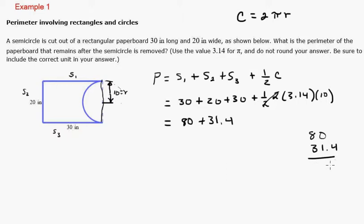So we get 0.4, then 8 plus 3 is 11, so I get 111.4. It's perimeter in inches because it's distance, it's inches.